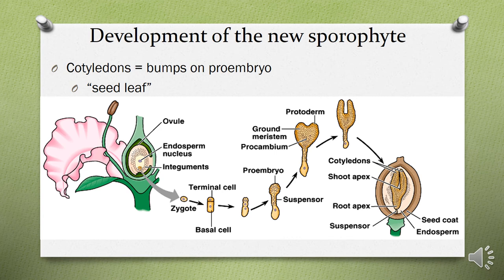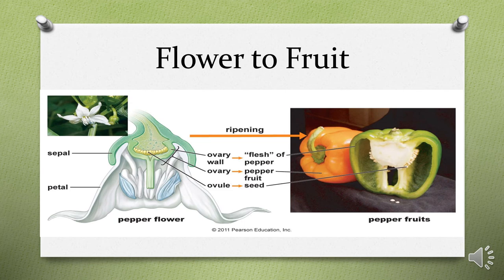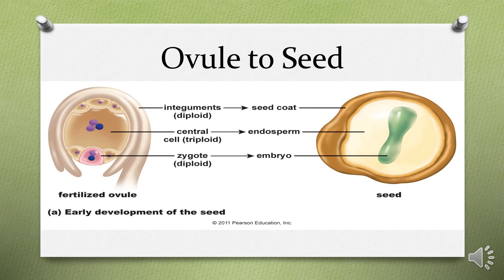This is the life cycle of an angiosperm — how the sporophyte develops after zygote formation. The ovary wall is converted into the flesh of the fruit, the ovary into the fruit, and the ovules into seeds. The integuments of the diploid cell are converted into the seed coat, the central cell or triploid into the endosperm, and the fusion of egg and sperm forms a zygote that develops into an embryo.